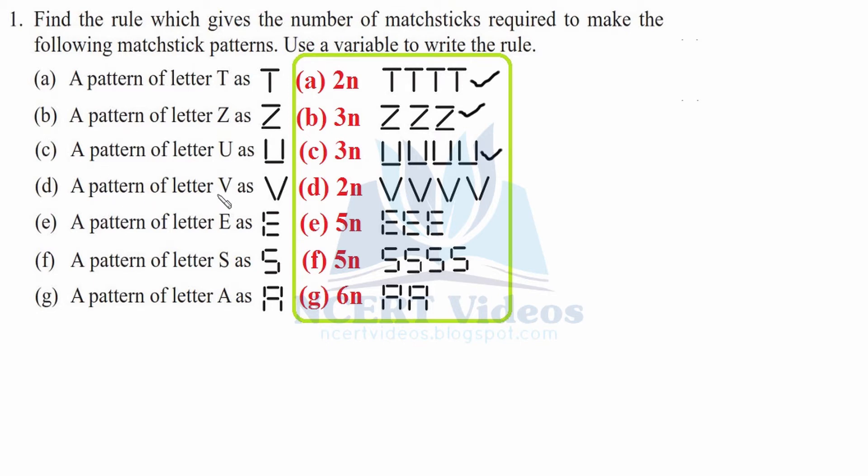A pattern of letter V. It is made up of 2 matchsticks. If we want to make 4 of them, we will need 8 matchsticks. So 4 times 2 equals 8. Again, same thing.